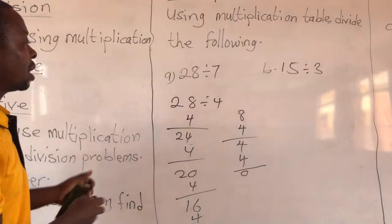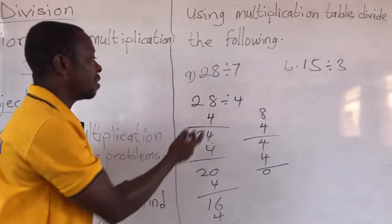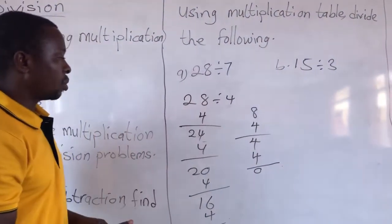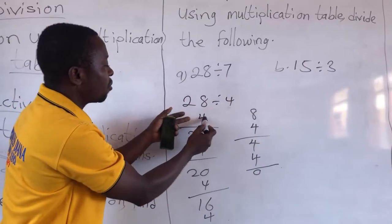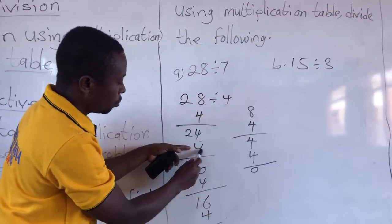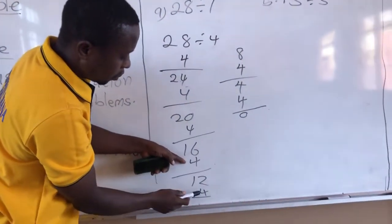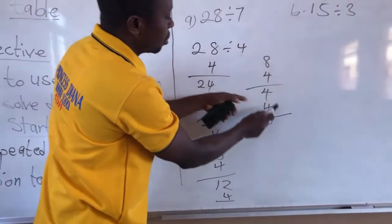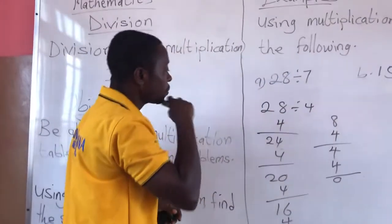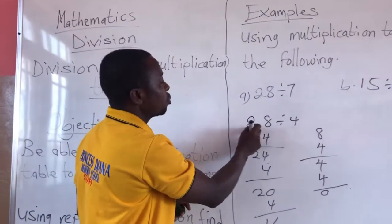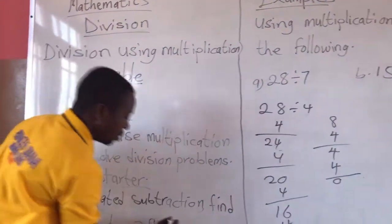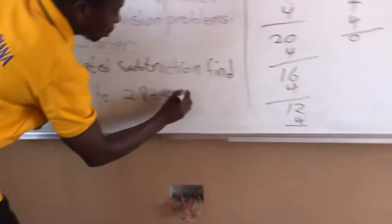After that we count the number of times we subtracted the divisor from the dividend. So let's count: 1, 2, 3, 4, 5, 6, 7. So 28 divided by 4 is equal to 7.